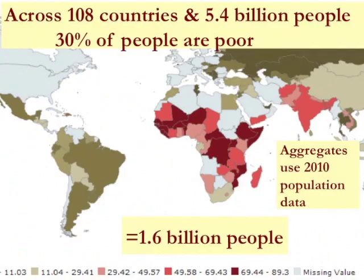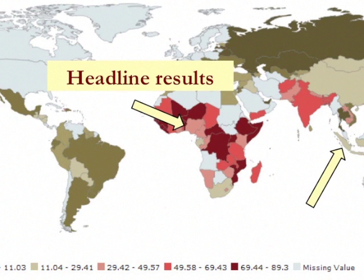So what did we find in 2014? We released estimations for 108 countries, covering 5.4 billion people. Across them, 30% of the people living in those countries are poor, or 1.6 billion people, using 2010 population data. What is distinctive about the multidimensional approach is that it doesn't only give you a headline indicator, but a lot of other information. The MPI is a headline result, and you can see if poverty has changed by comparing MPI levels over time. Poverty changes either because the percentage of poor people reduces, or because the intensity of poverty that poor people experience reduces.